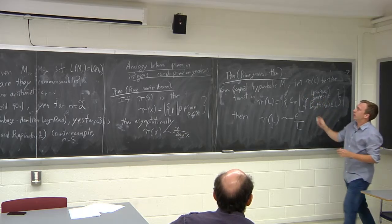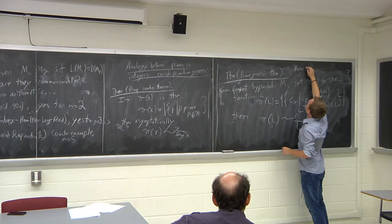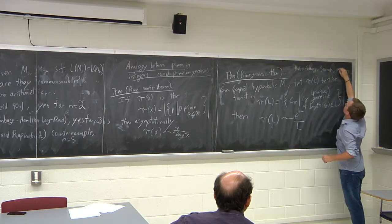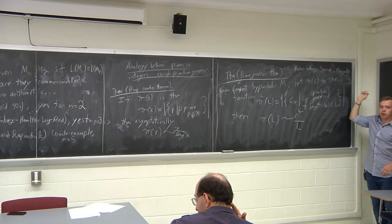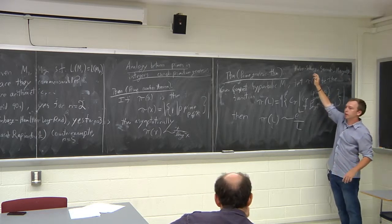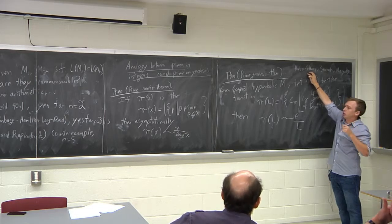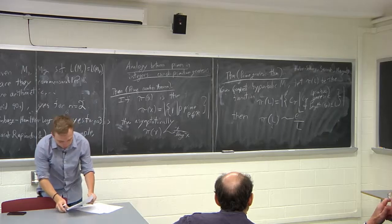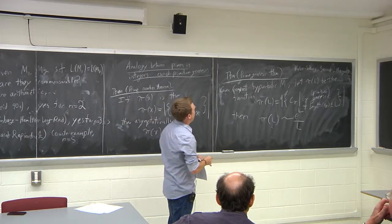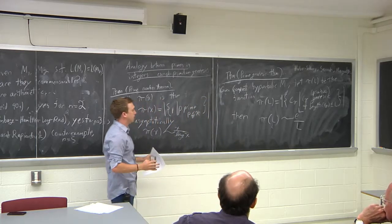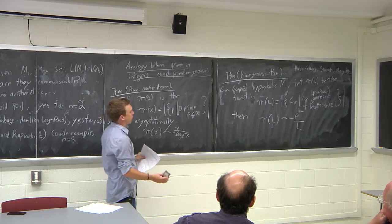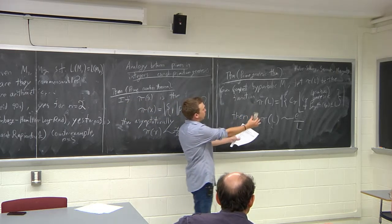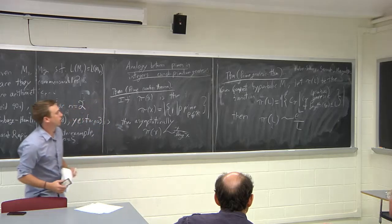This was first proved by Huber and Selberg, generalized by Sarnak, and the most general case done by Margulis — going from constant curvature up to variable negative curvature. This is the starting point of the analogy: theorems about primes in the integers — or more generally rings of integers of number fields, finite extensions of Q — can be translated into theorems about primitive geodesics.